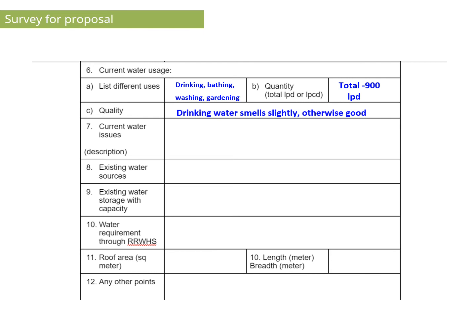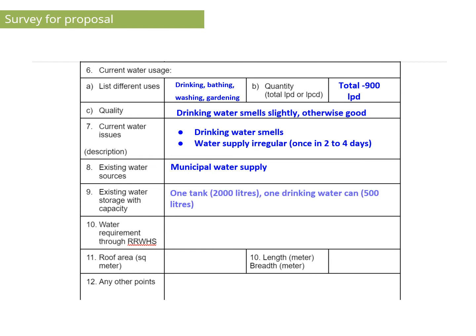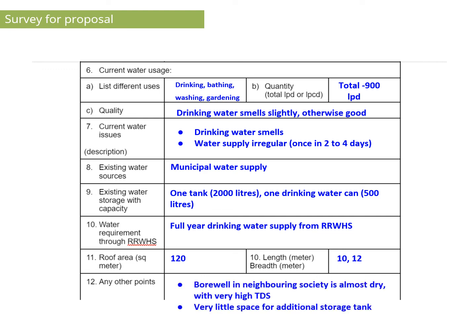Then, what is the quality of water? Is it good? Does it smell? Are there any water issues, such as irregular water supply? Which is the existing water source? What is the existing water storage capacity? What is the requirement through RRWHS? What is the roof area? Other points may include: the water well in a neighboring society is almost dry with very high TDS, or there is very little space for an additional storage tank.